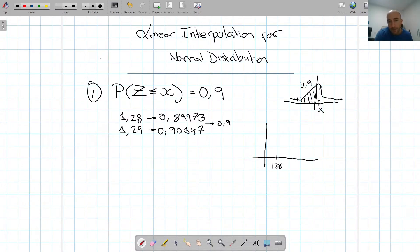And that if we have 1.28 here and 1.29 here, and this is 0.89973, and that over here is 0.90147, we're going to suppose that we can approximate the difference to a straight line and that our point is somewhere around here.